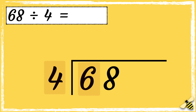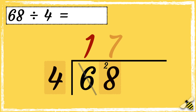So how many fours go into six? Four goes into six once with two left over. So now we can work out how many fours go into 28. Four goes into 28 seven times, so the answer is 17.